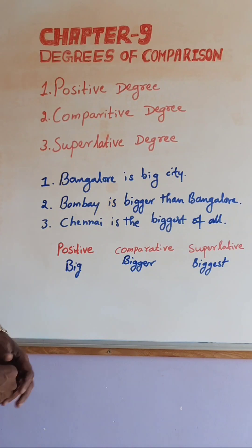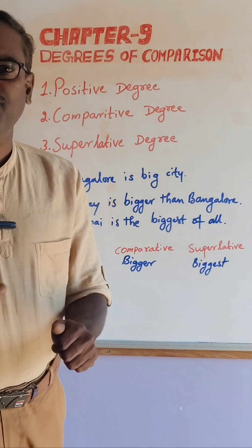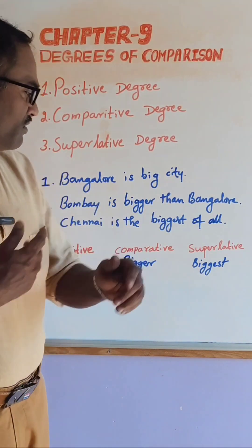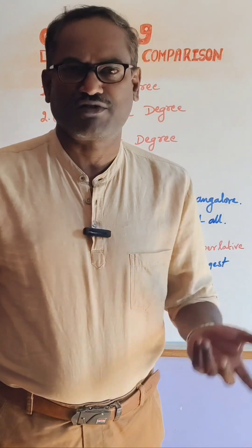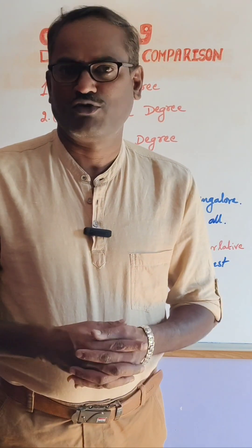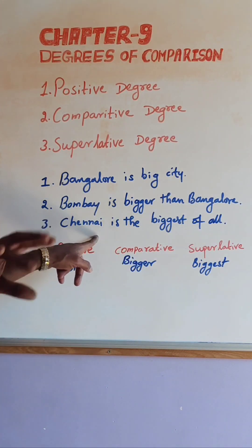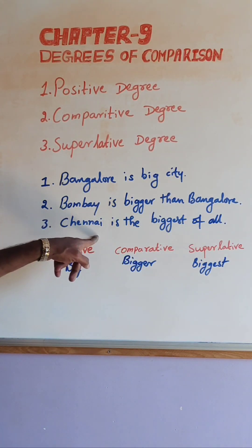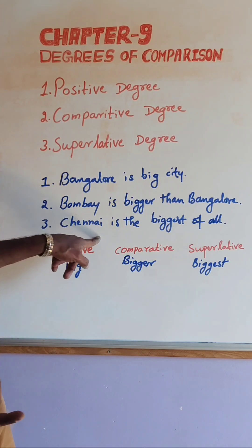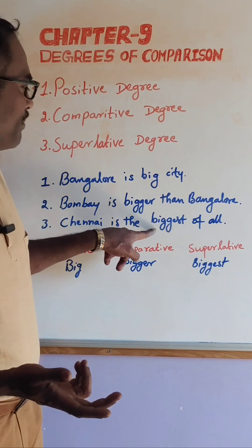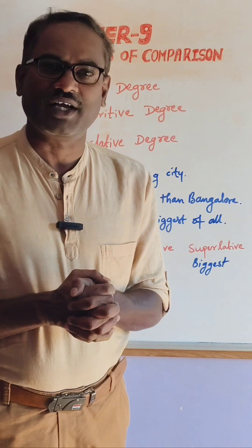Chennai is the biggest of all. The quality of the noun shows the highest quality, so it is called superlative degree. The highest quality is shown — Chennai is the biggest city of all, so 'biggest' is said to be superlative degree.